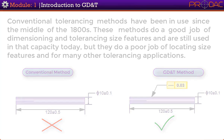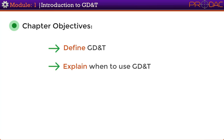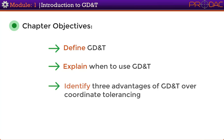The objectives of this module are to: define GD&T, explain when to use GD&T, and identify three advantages of GD&T over coordinate tolerancing.